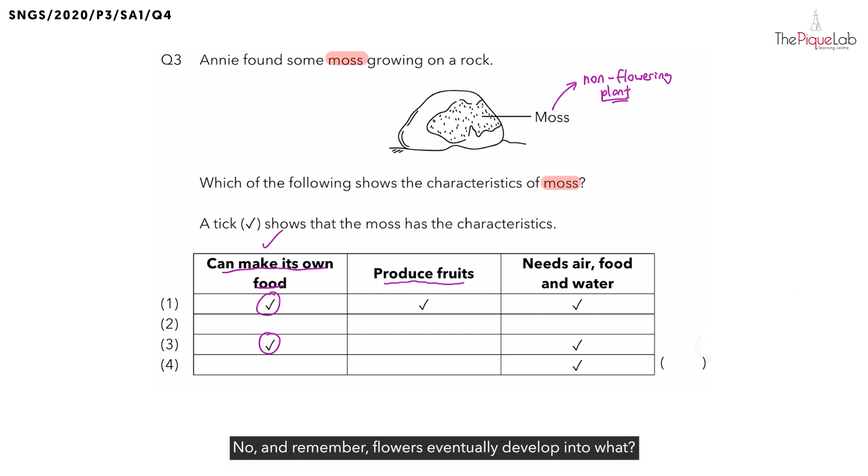And remember, flowers eventually develop into what? Flowers eventually develop into fruits. Which means, do non-flowering plants bear fruit? No. So, I'm going to write this down over here. It does not bear fruits.